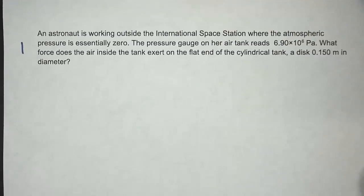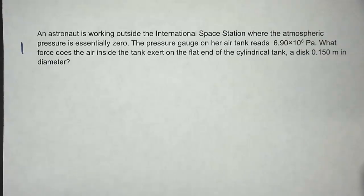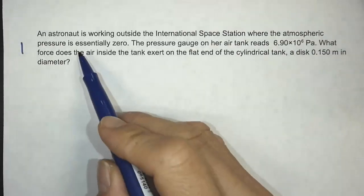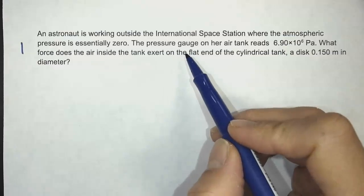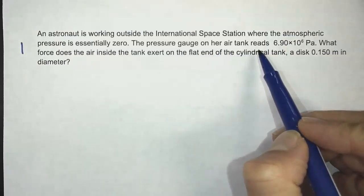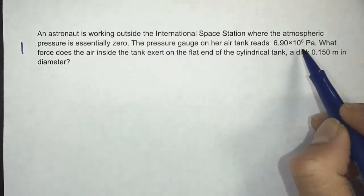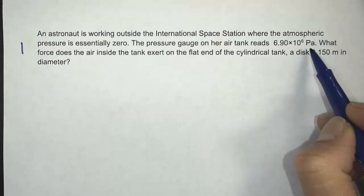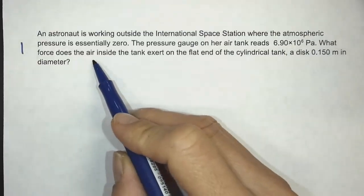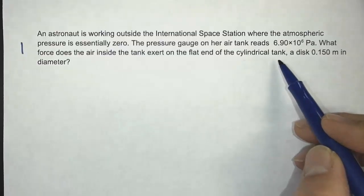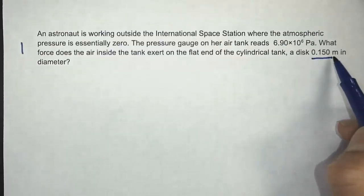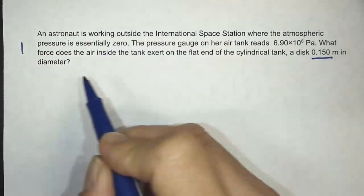Here's our first problem. An astronaut is working outside the International Space Station where the atmospheric pressure is essentially zero. The pressure gauge on her air tank reads 6.9 times 10 to the 6 pascals. What force does the air inside the tank exert on the flat end of the cylindrical tank — a disk of 0.150 meters in diameter?